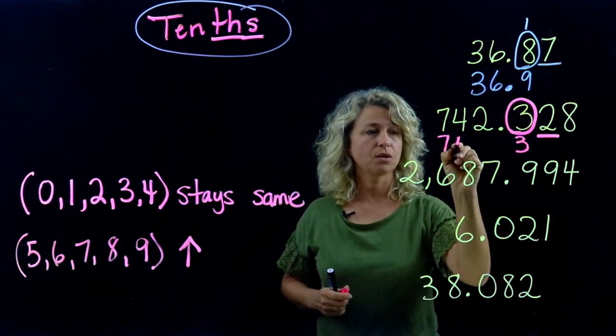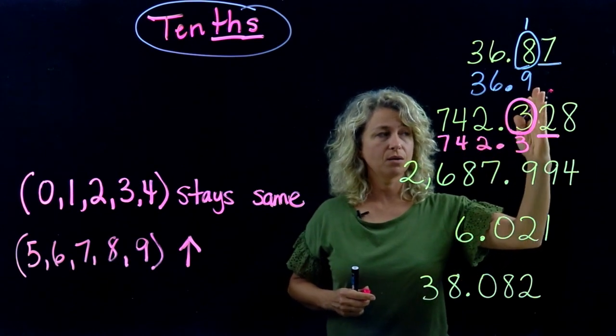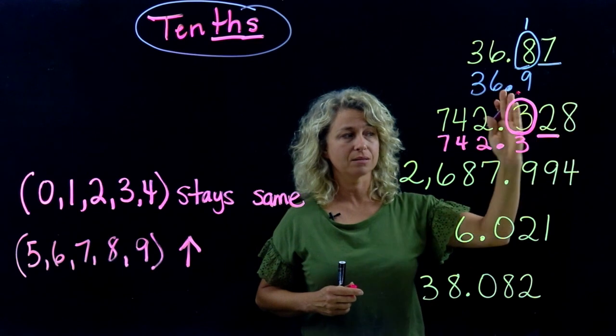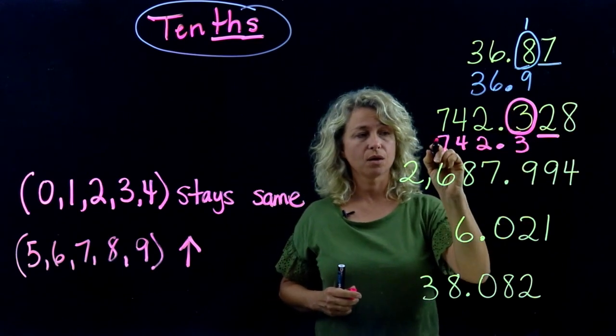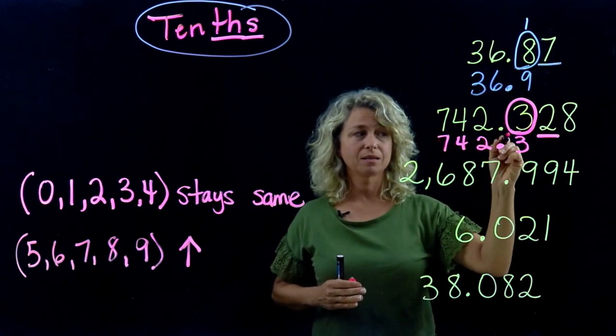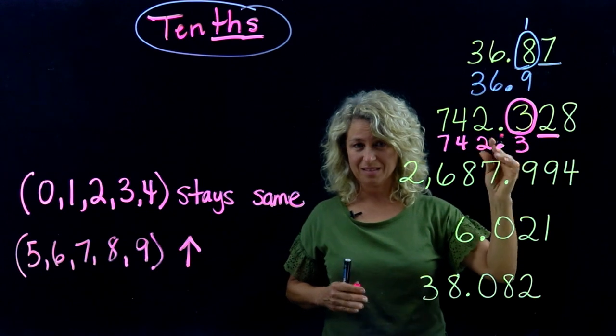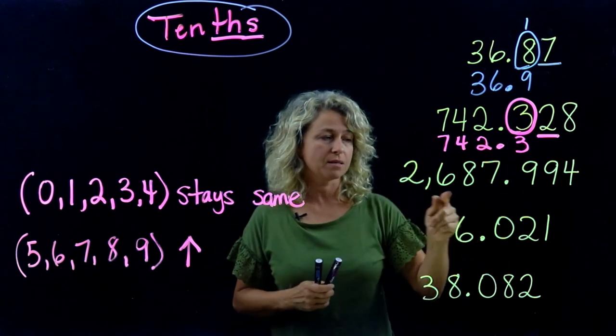Just bring down your other numbers. Don't forget the decimal, and do not carry—you don't need anything past that. Stop at that place digit, the tenths place. So your final answer is 742.3. Not so hard, is it? Let's keep going. 2,687.994.